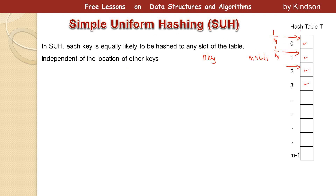So it's saying that keys are hashed into the hash table randomly — that is the key word. That makes it so that we have a probability of 1 over m per slot. That means the total probability, if you will, would be n times 1 over m.